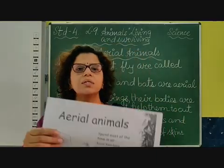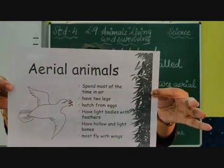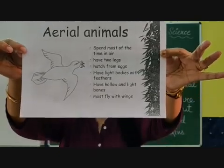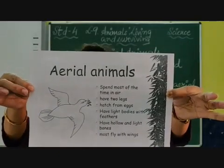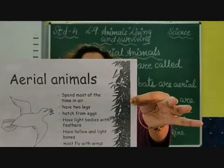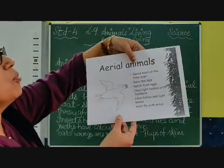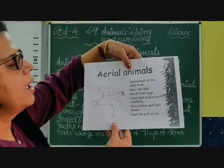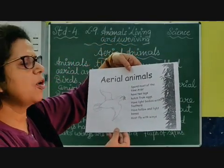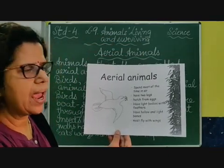Good morning students. Today we are learning about aerial animals. As you know, aerial animals are those animals that can fly and spend most of the time in air. They have two legs, and they hatch from eggs — meaning they give birth to their babies through eggs.